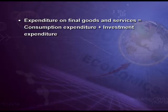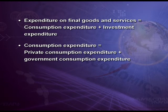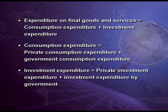We can write it as: expenditure on final goods and services equals consumption expenditure plus investment expenditure. Consumption expenditure equals private consumption expenditure plus government consumption expenditure.